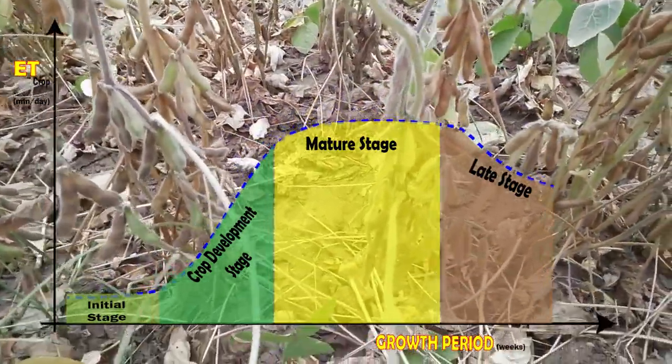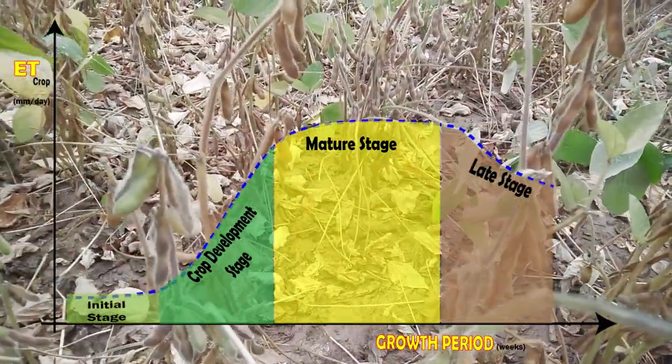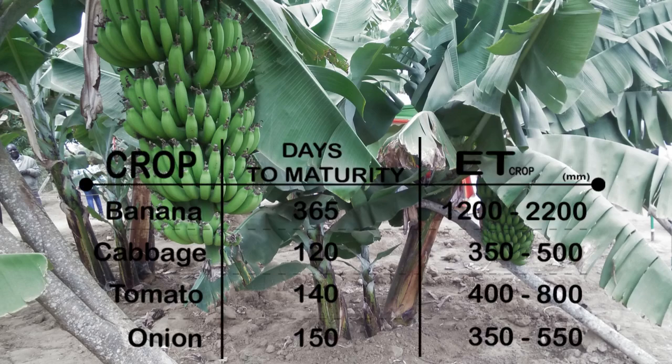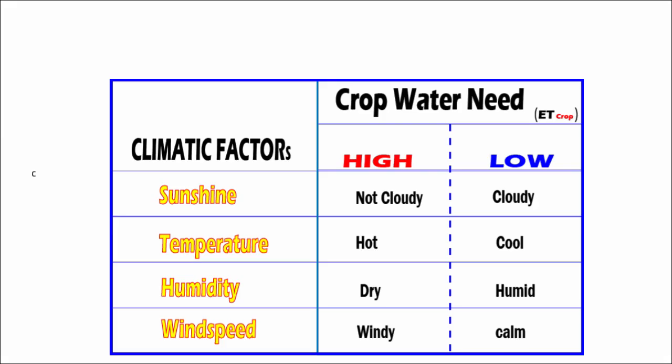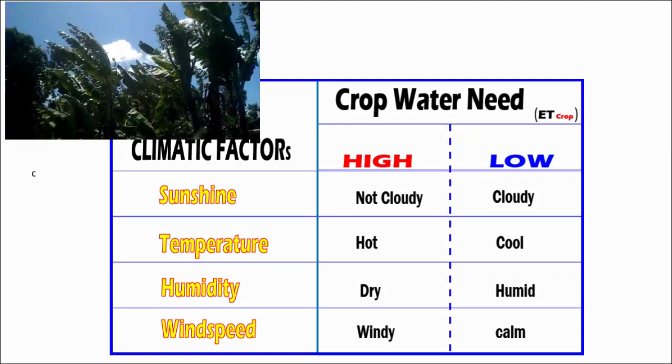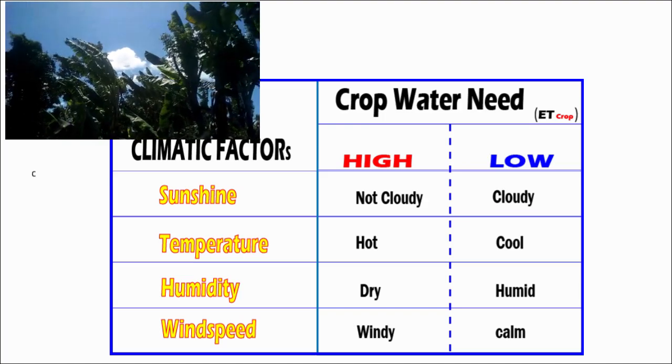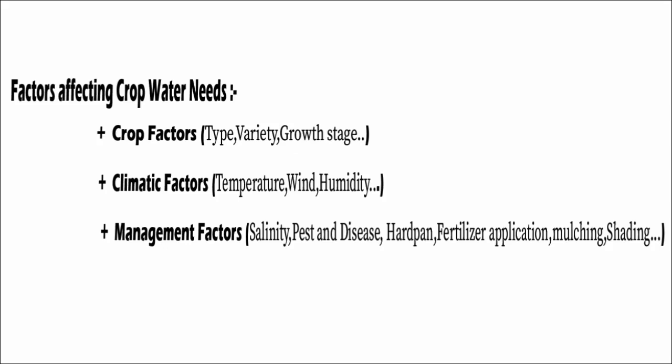The length of the growing period also affects crop water needs — if the crop takes longer to mature, it will require more water. Climate is another key factor: crops grown in dry, hot, and windy areas will require more water, because hot, dry, and windy environments increase evapotranspiration. There are many other management factors that affect crop water need, but we'll leave those for another video.